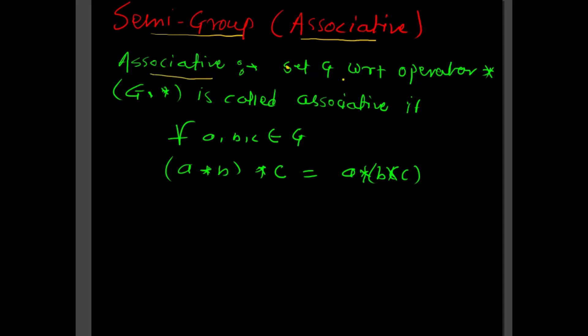A set G with respect to operator star — that is (G, *) — is called associative if for all elements a, b, c belonging to set G, the expression (a * b) * c is equal to a * (b * c). If it satisfies this property, it is called associative.